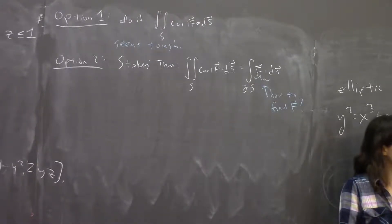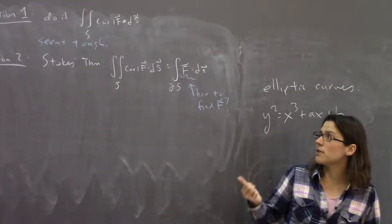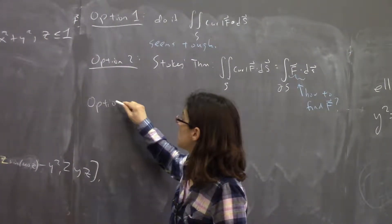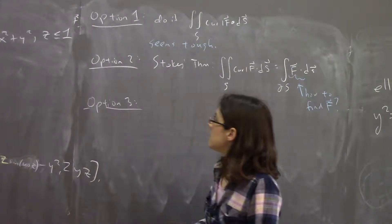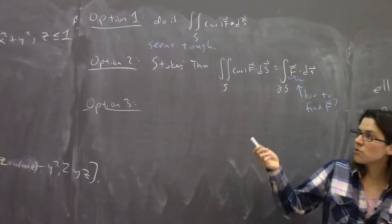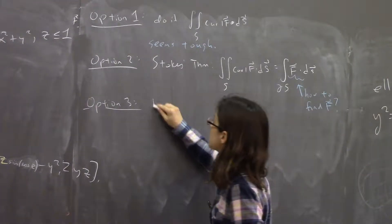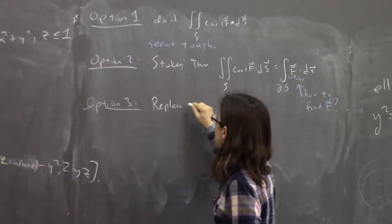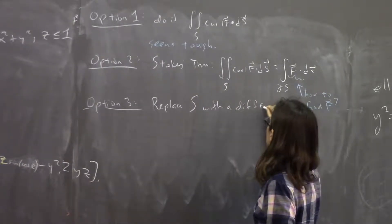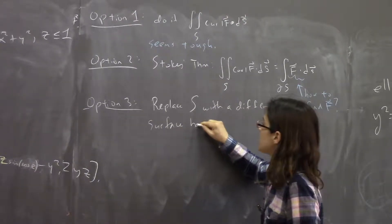We're sort of running out of options. We thought about doing it directly. We thought about using Stokes' theorem. The next option — something we talked about previously — is that you can replace the surface with a different surface that has the same boundary curve.